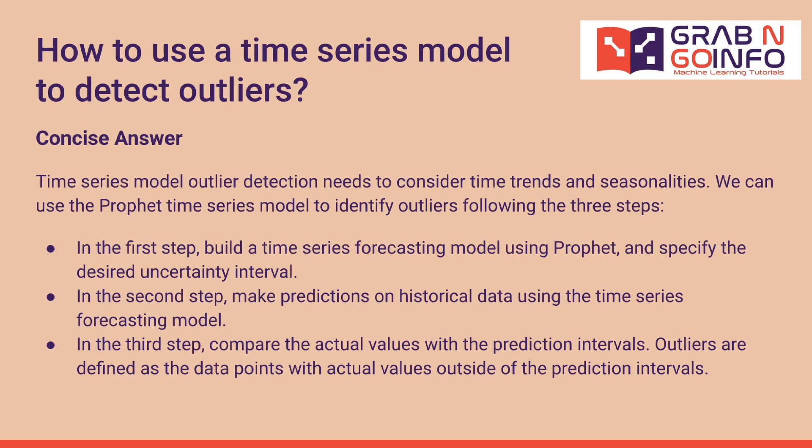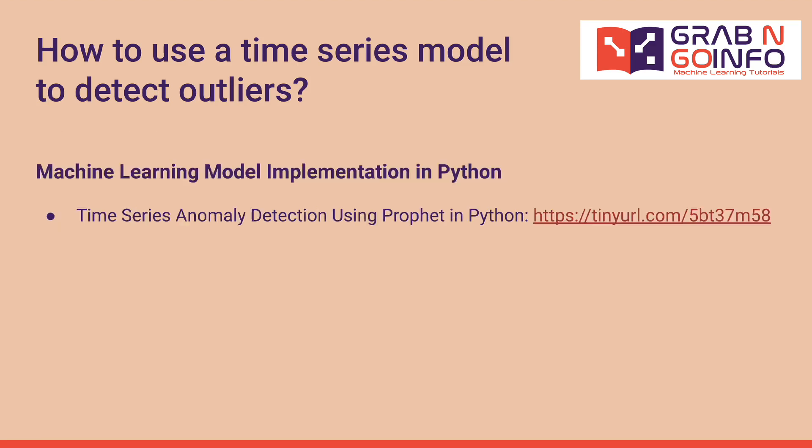Follow-up question 4: how to use a time series model to detect outliers. Time series outlier detection needs to consider time trends and seasonalities. We can use the Prophet time series model following three steps. First, build a time series forecasting model using Prophet and specify the desired uncertainty interval. Second, make predictions on historical data. Third, compare actual values with the prediction intervals — outliers are data points with actual values outside those intervals. A recommended tutorial covers time series anomaly detection using Prophet in Python.